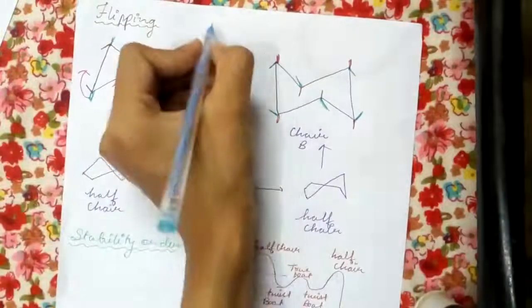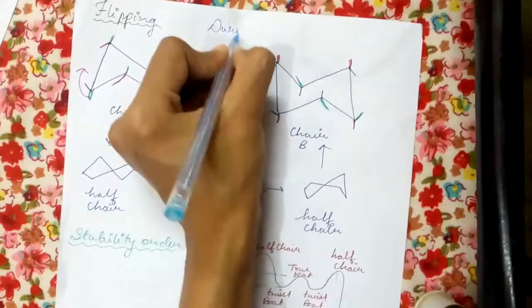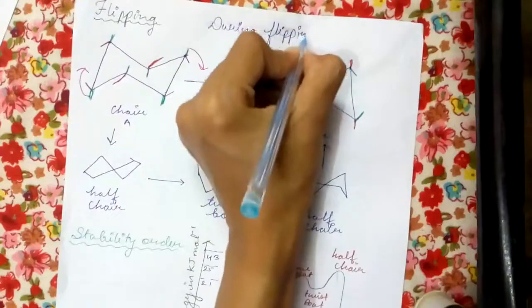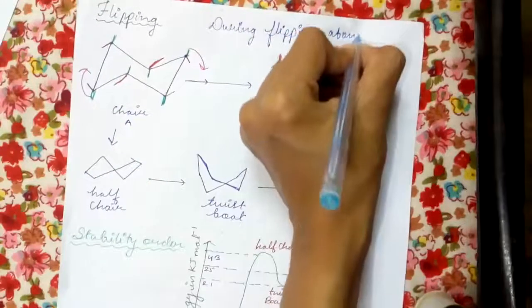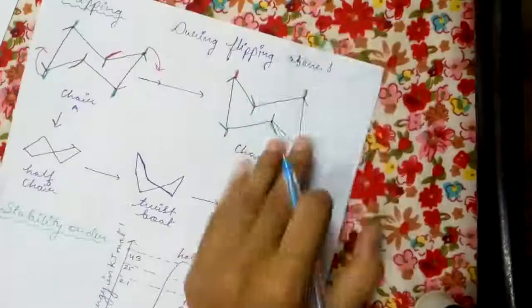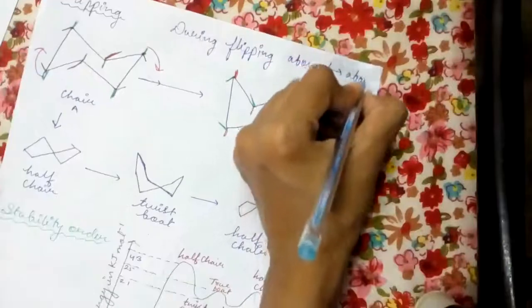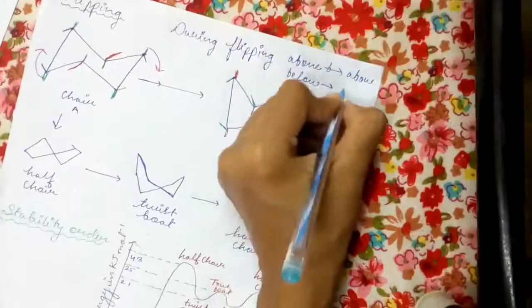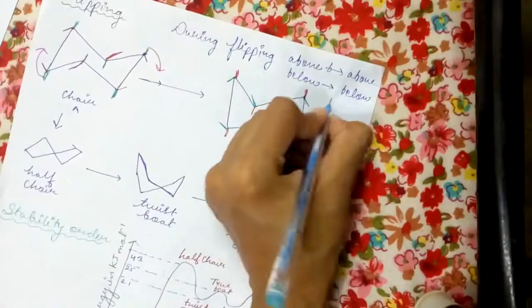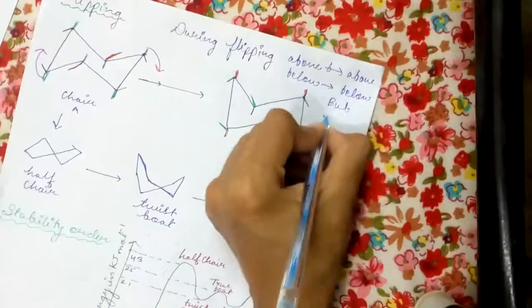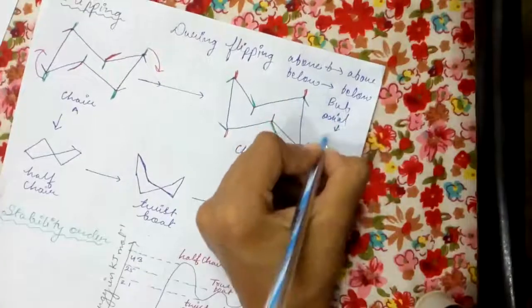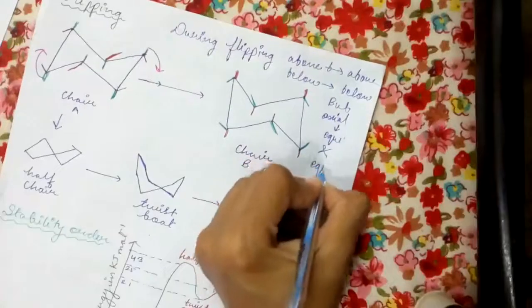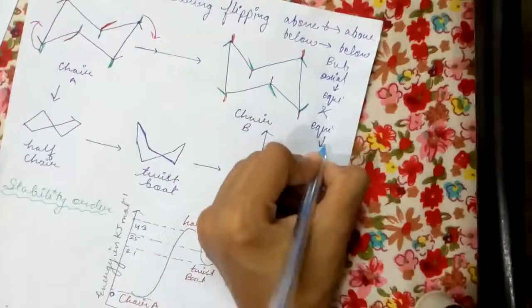Remember one thing: during flipping, above bonds remain above and below bonds remain below. Axial becomes equatorial and equatorial becomes axial.